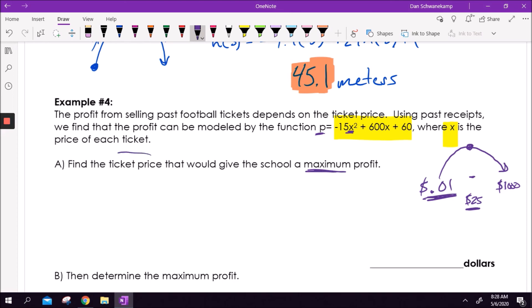Find the ticket price that would give the school a maximum profit. I want to know the ticket price, so that is x. X is the price of each ticket. Negative b over 2a. I'm trying to find the maximum, so I'm trying to find the vertex. Negative b, so negative 600 divided by 2 times a, which is 2 times negative 15. Basically we're doing negative 600 divided by negative 30, which equals 20 bucks. That is the x-value, which is the price of each ticket. So how much should I charge? 20 bucks is going to make me the most money.